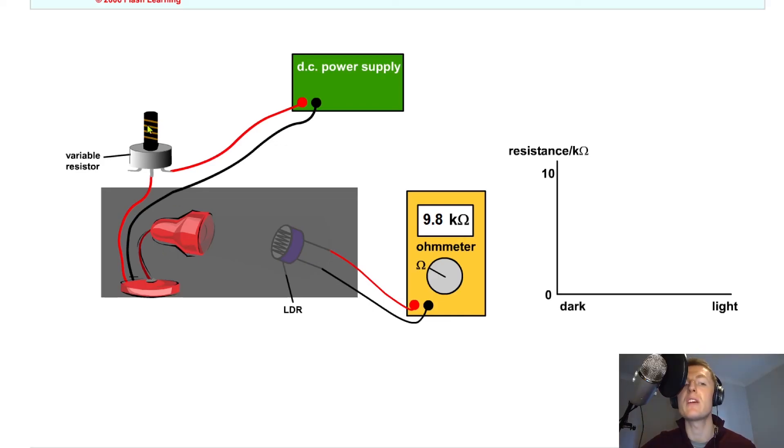So if we turn on the lamp and adjust the variable resistor to change the intensity of the light, then what we should see is that as the intensity of the light goes up, then the resistance of the LDR goes down. And we can clearly see that on the display on the ohmmeter here.